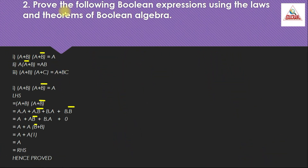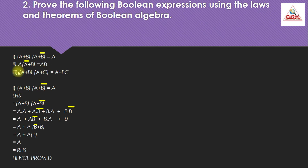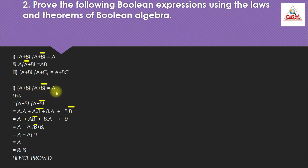Now the second problem: prove the following Boolean expressions using the laws and theorems of Boolean algebra. First: (a+b)·(a+b̄) = a. Second: a·(ā+b) = ab. Third: (a+b)·(a+c) = a+bc. We will solve them one by one, starting with the first: (a+b)·(a+b̄) = a.